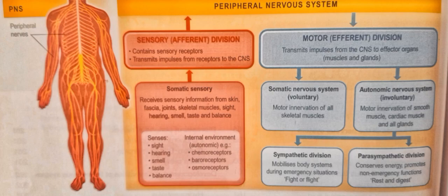The sensory division contains receptors. For example, when discussing insulin, beta cells of the islets of Langerhans have receptors on their surface, like glucose receptors. When glucose is present, these receptors grasp it and promptly produce insulin. These are called receptors — channels that sense and respond. Somatic sensory division receives information from skin, face, joints, skeletal muscles, sight, hearing, smell, taste, and balance. Visceral sensory receptors monitor the internal environment, such as chemoreceptors, baroreceptors, and osmoreceptors, sending information to the CNS.